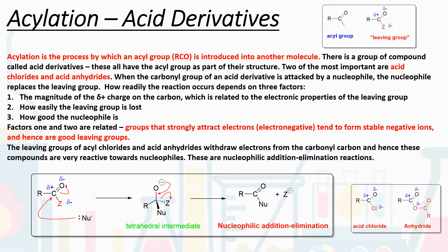They're called acid derivatives because they essentially look a bit like a carboxylic acid, but we've just taken the OH part of that molecule off. Two of the most important are acid chlorides and acid anhydrides. You can see the structure of these molecules at the bottom right. An acid chloride has an acyl group — a carbonyl group and an R group — with a chlorine attached. An anhydride has that acyl group bonded to essentially another acyl group.